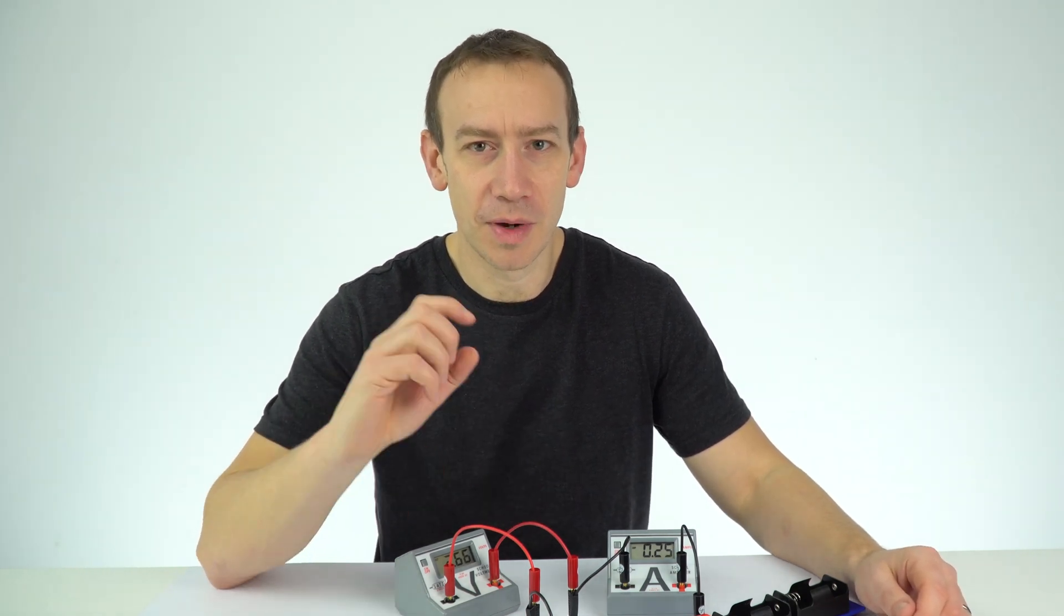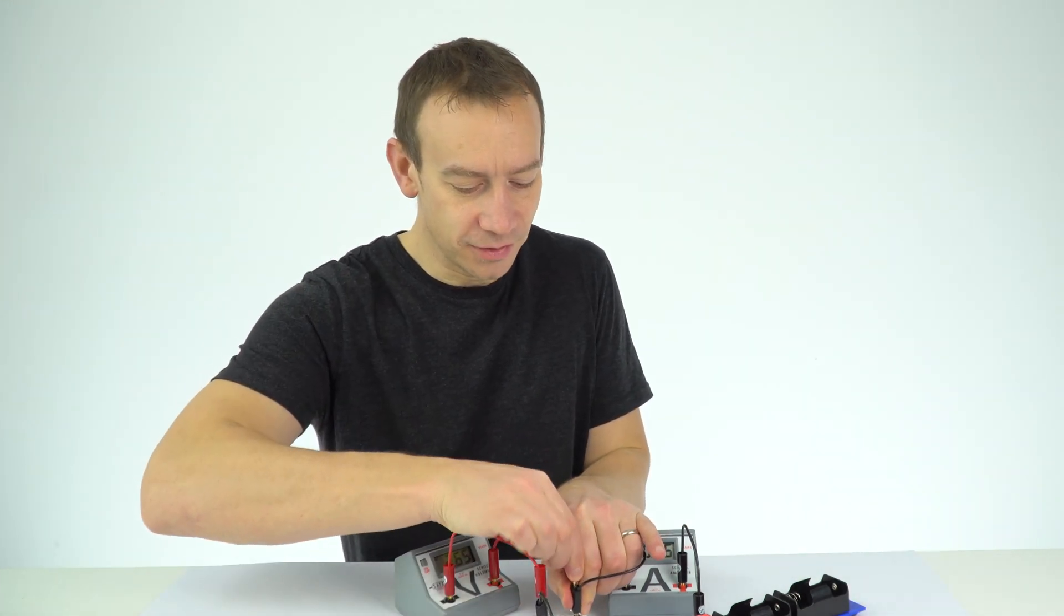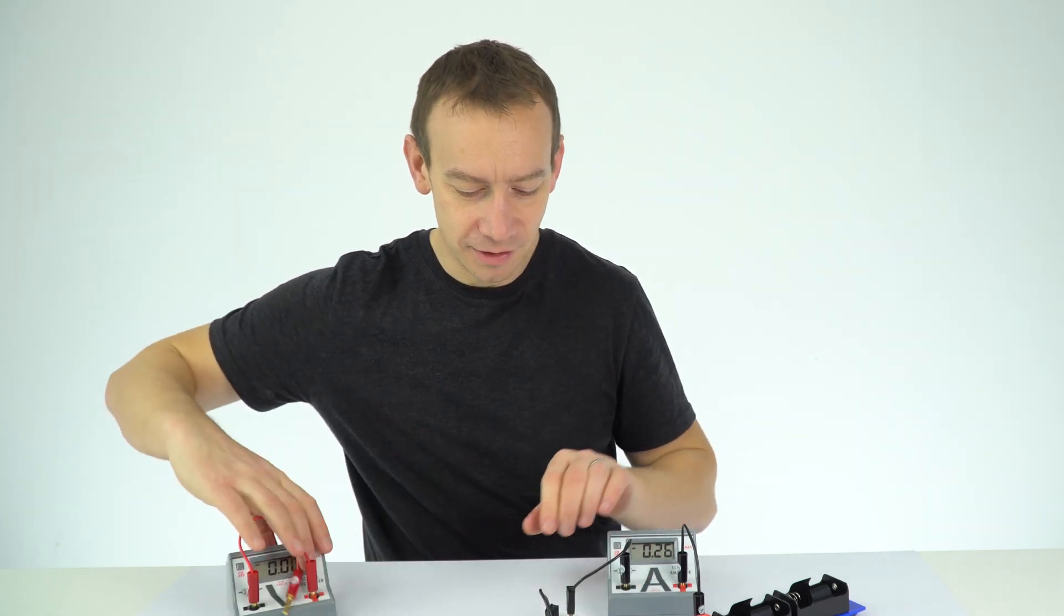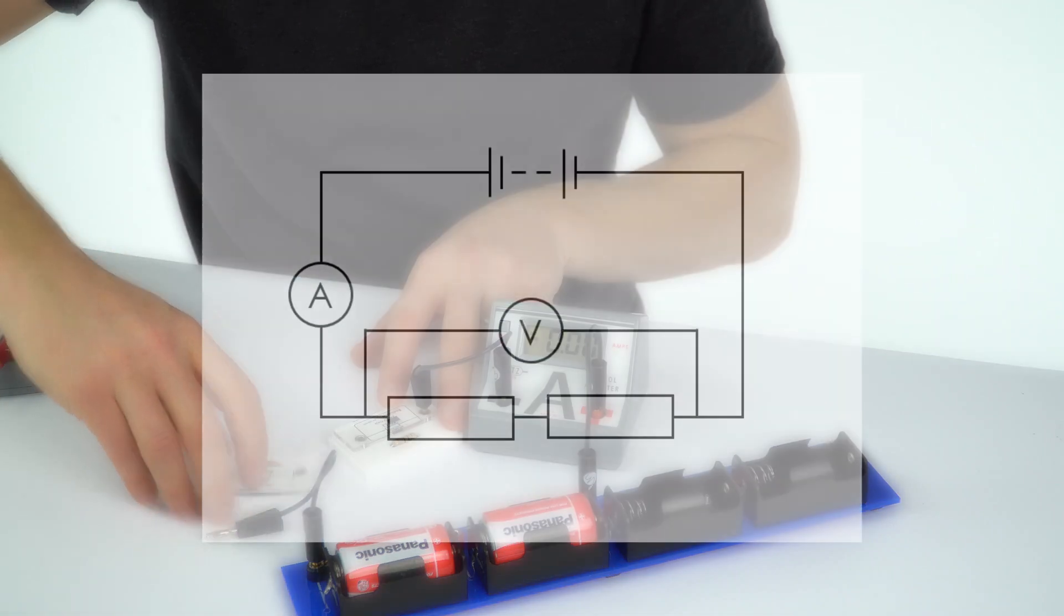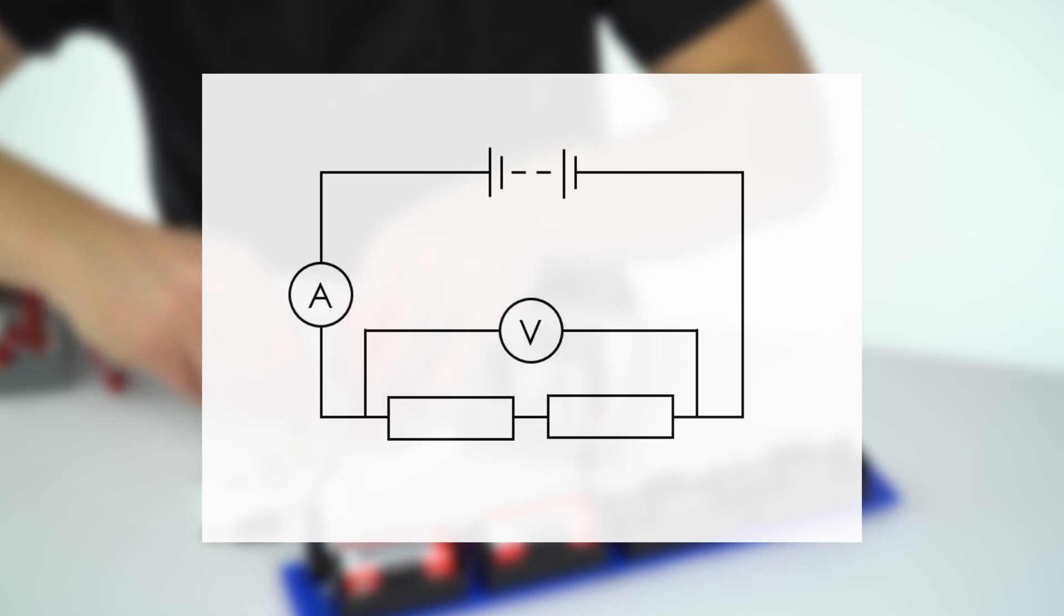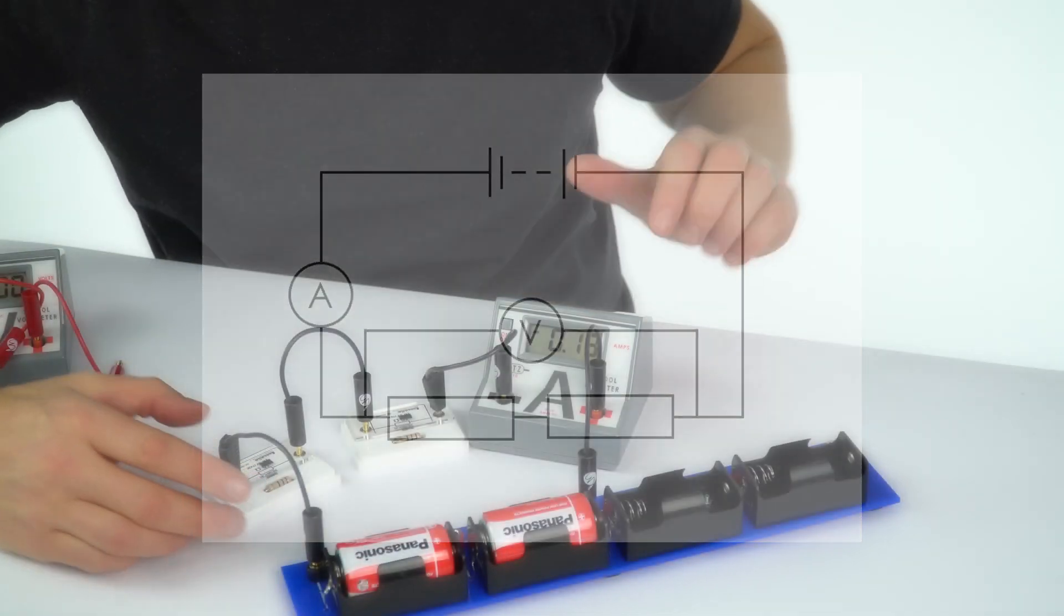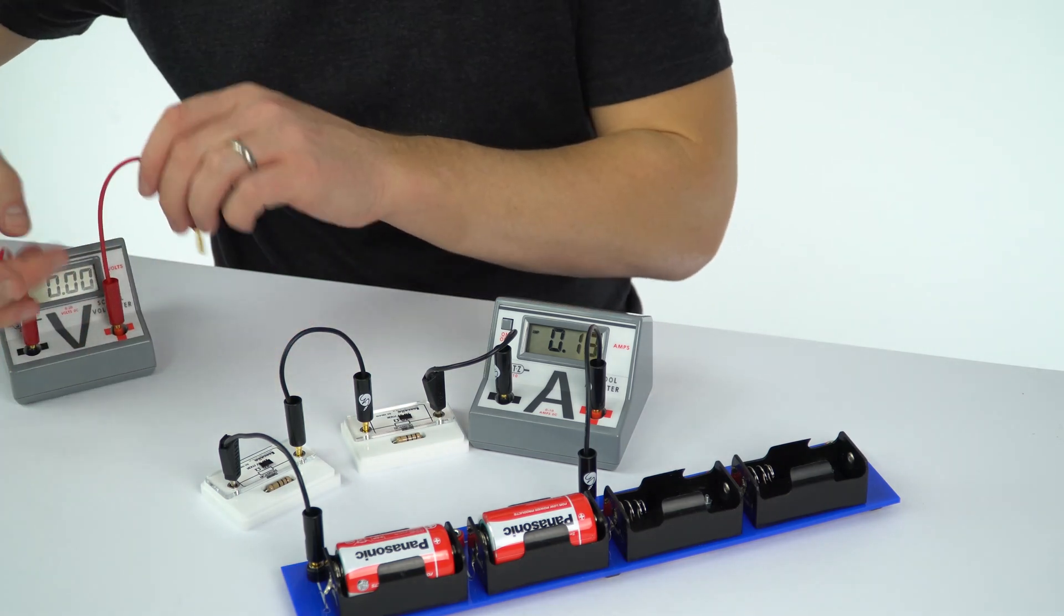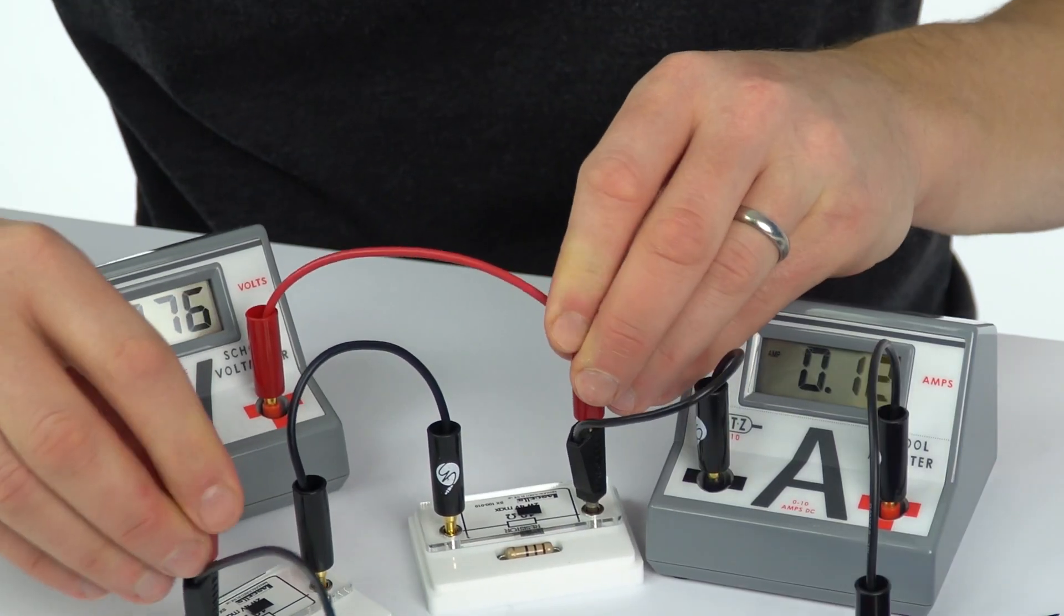We're now going to see what happens when we connect them in series. To do that, just to make sure I don't get confused with the wires, I'll take the voltmeter out. I'm now going to put the two resistors like this and connect them up with this wire. Once again, now they're in series we can see there's a reading on the ammeter, and if I put the voltmeter in parallel this is the reading we're going to take.